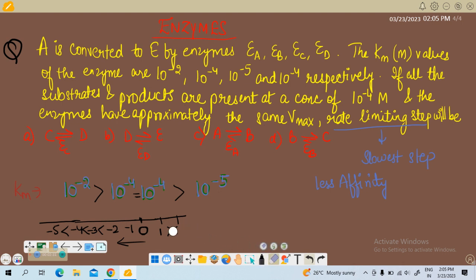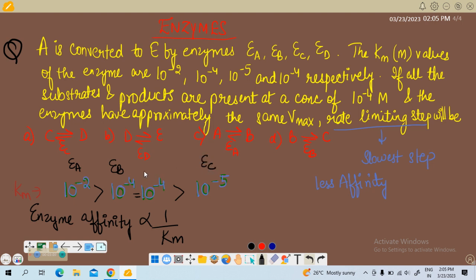This was just to explain you. Enzyme affinity is inversely proportional to Michaelis constant. So 10 raised to power minus 2 is for EA, EB is 10 raised to power minus 4, EC is 10 raised to power minus 5, and ED is 10 raised to power minus 4. So we have this as the highest Km value, highest Km.